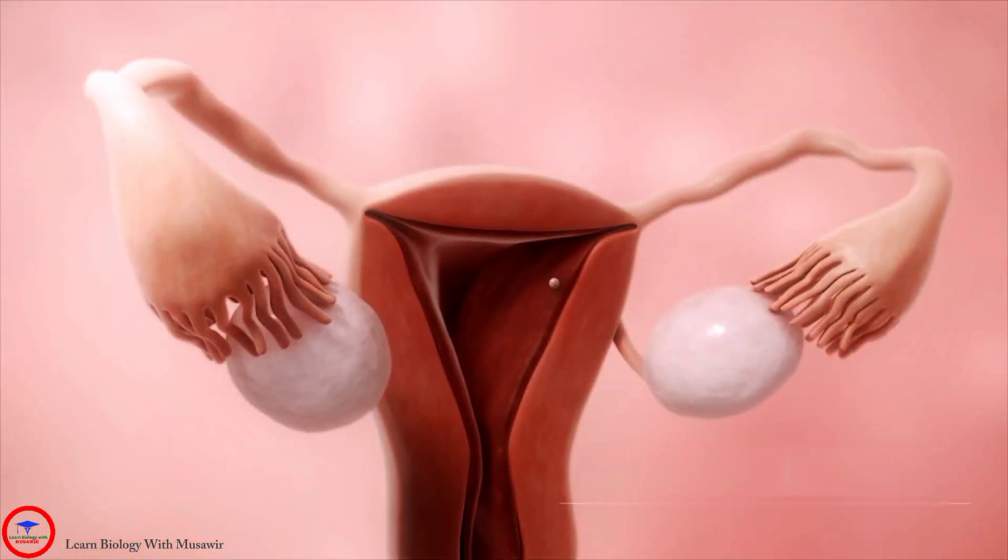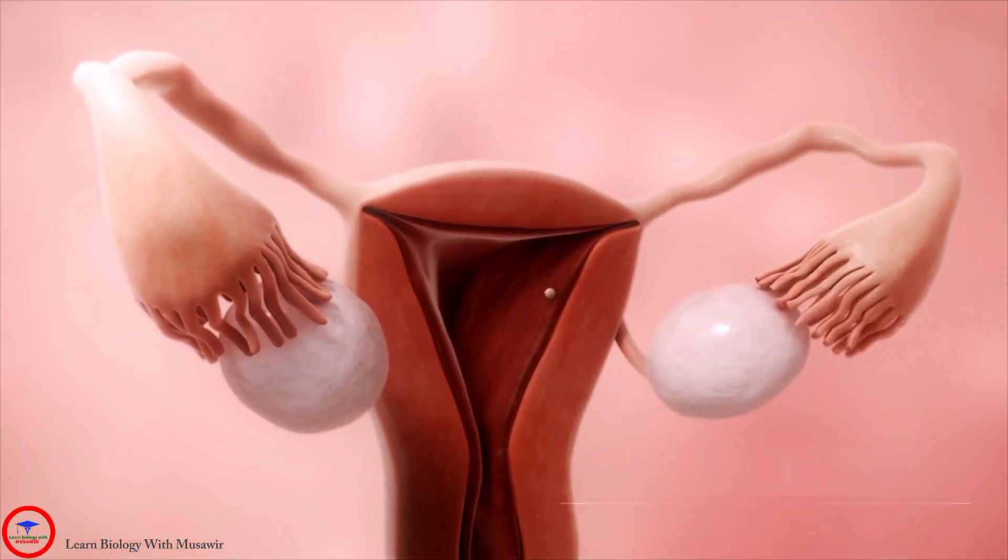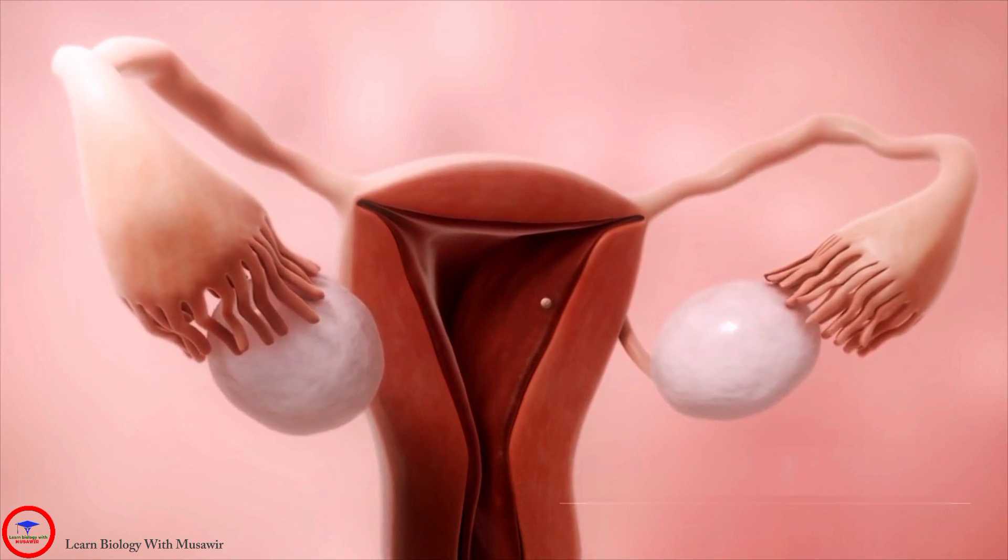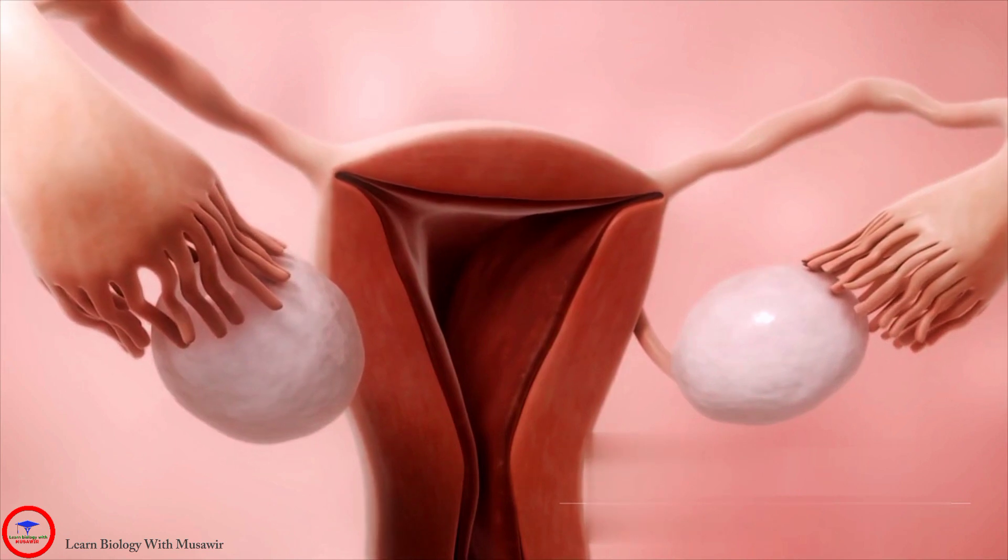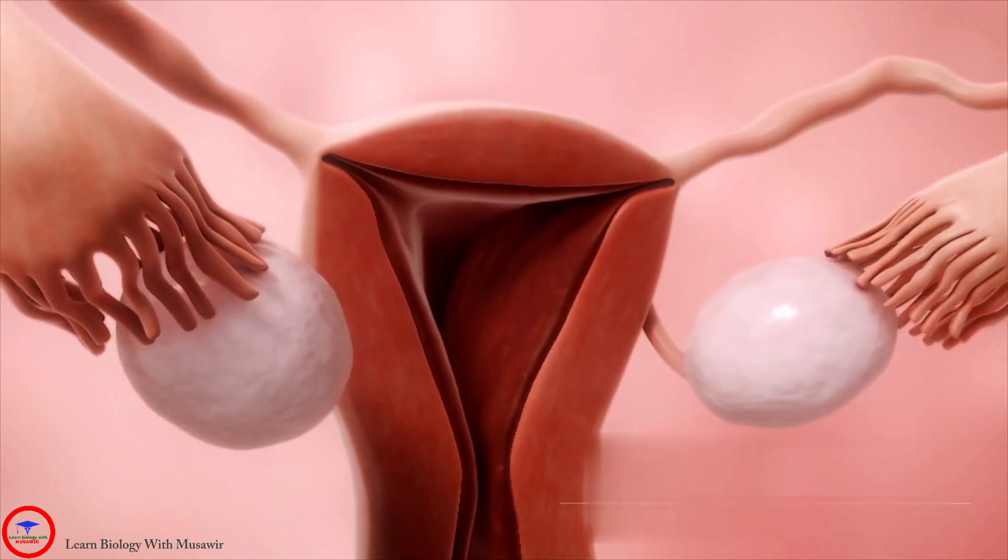When the zygote reaches the uterus, it implants in the lining of the uterus and pregnancy begins. If the egg isn't fertilized, it's simply reabsorbed by the body, perhaps before it even reaches the uterus.